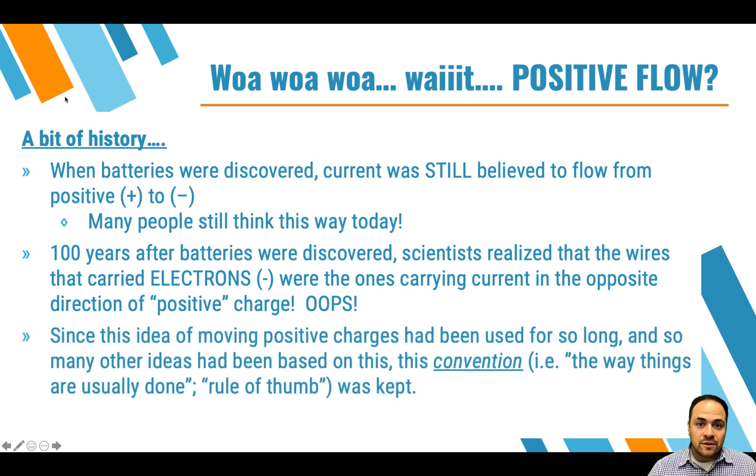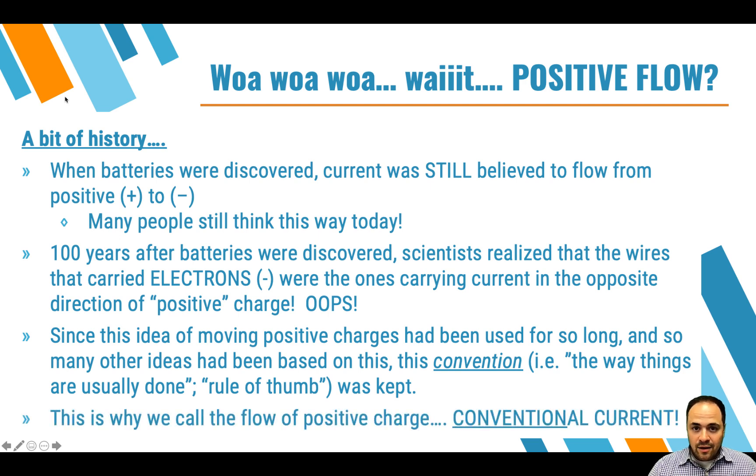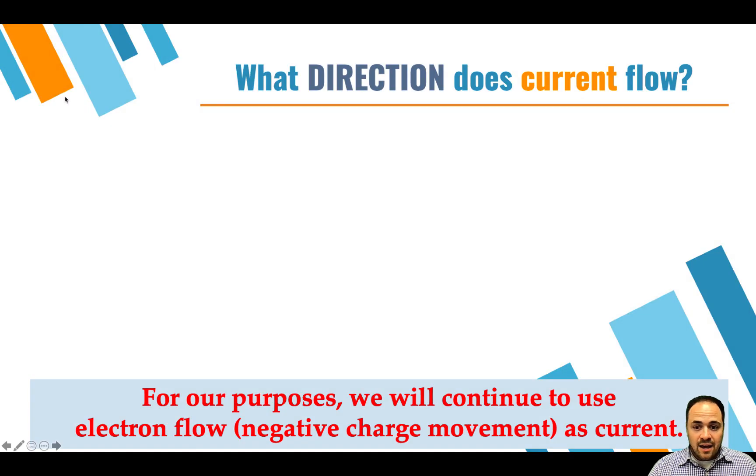And they were moving in the opposite direction of the direction that positive charge was believed to flow in. Problem is, we were doing this for so long, it became the rule of thumb, or the convention. So when we talk about positive charge movement, we are talking about conventional current. It became the convention. We stuck with it, still use it to this day with rules and physics and other sciences. So when we're talking about conventional current, we're talking about the movement of positive charge. If we're talking about actual current, we're talking about the movement of negative charge.